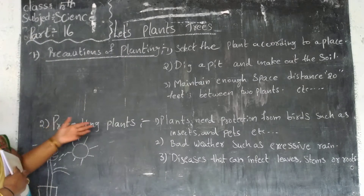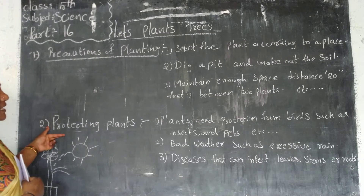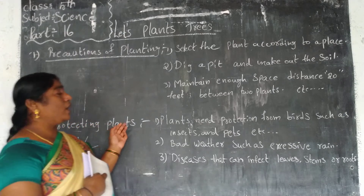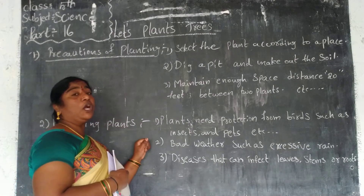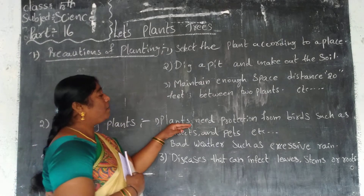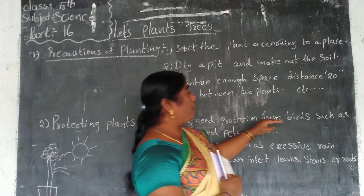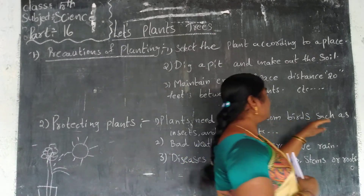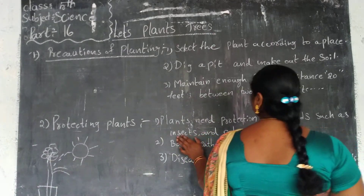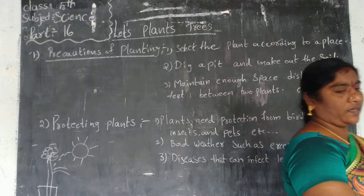Next is protecting plants. Plants need protection from birds, insects and pests, and grazing animals such as squirrels and monkeys.